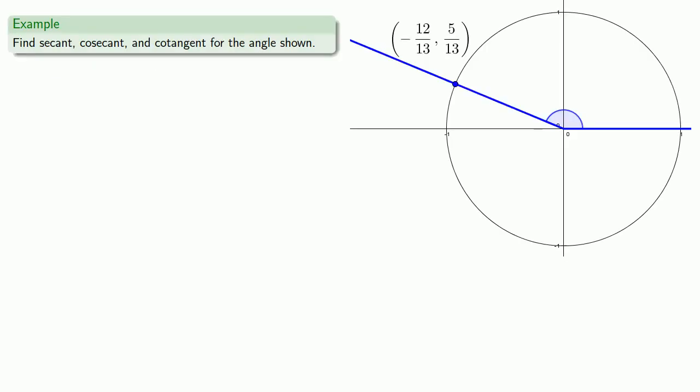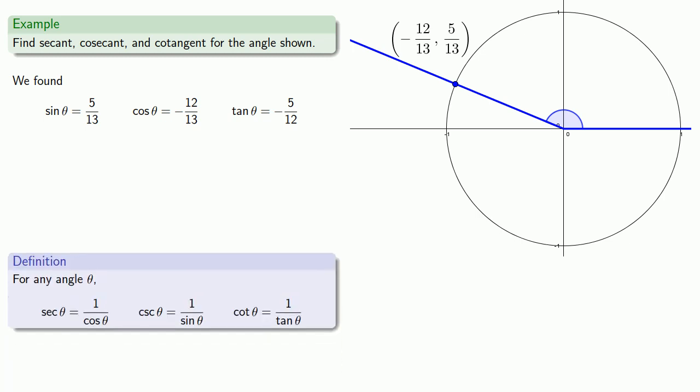So we can try to find the secant, cosecant, and cotangent for the angle shown. Now we've already found the sine, cosine, and tangent. And the thing to remember is the secant, cosecant, and cotangent are the reciprocals of these functions. So secant is the reciprocal of cosine, cosecant is the reciprocal of sine, and cotangent is the reciprocal of tangent.